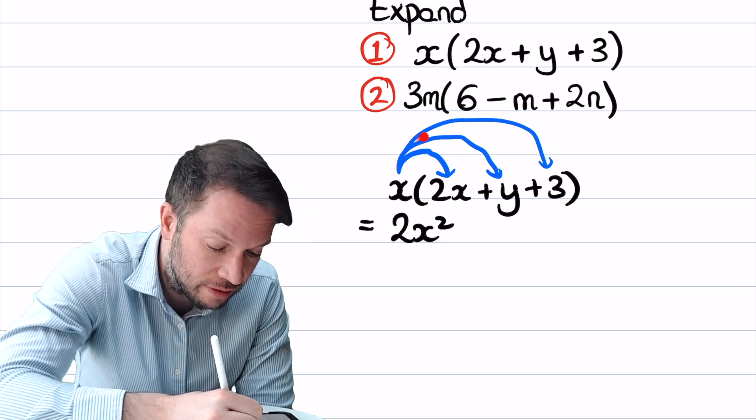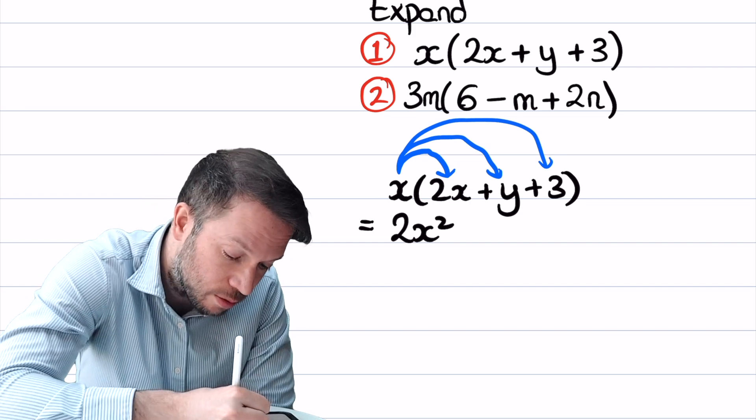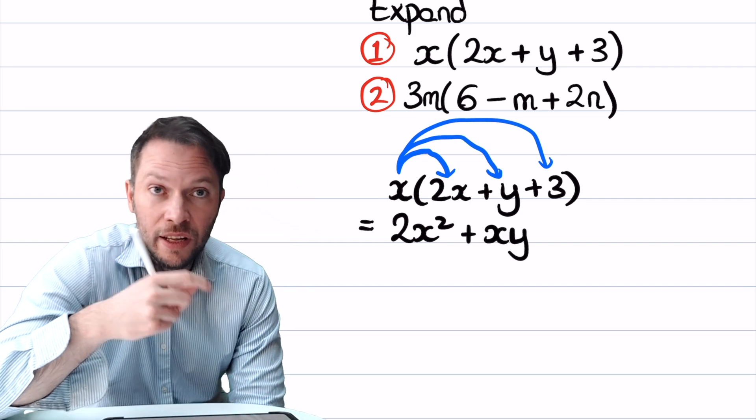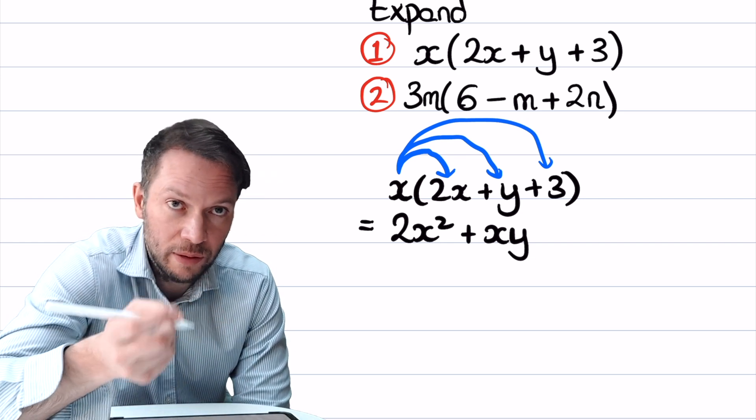Next we've got x times by y, which would just be xy. Remember in algebra if we had xy, the letters are next to each other, so it just means you multiply them together. x times by y. And we try to avoid the times symbol in algebra.